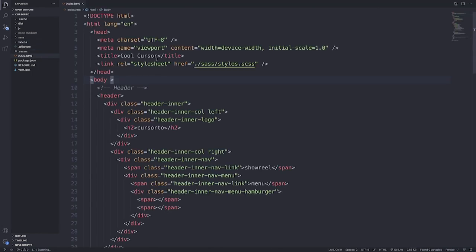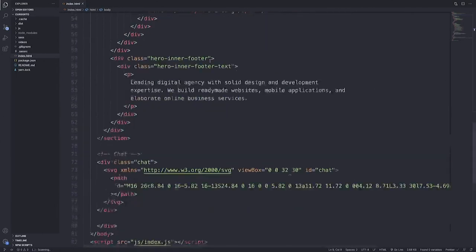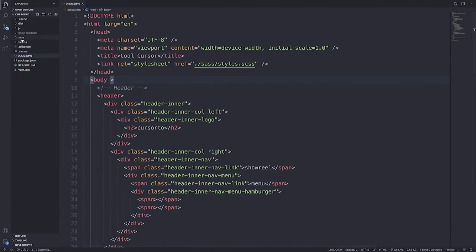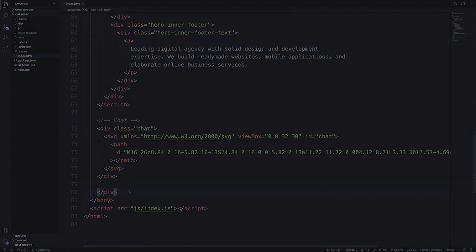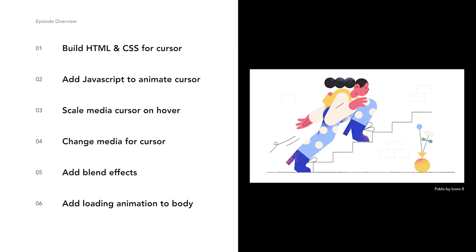And then finally we have our index.html, which is our main page entrance. We have the script for index.js on the bottom, and at the top we have a link to our SASS stylesheet. Using Parcel Bundler, you'll reference it as a SASS stylesheet and not CSS, and they will handle the conversion for us. I've broken down this project into six steps: step one is to build the HTML and CSS for our cursor; step two is to add JavaScript to animate the cursor; step three is to scale the media cursor on hover; step four is to change the media for the cursor depending on which item we hover on; step five is to add the blend effect; and step six is to add a loading effect to the body to prevent flashing.